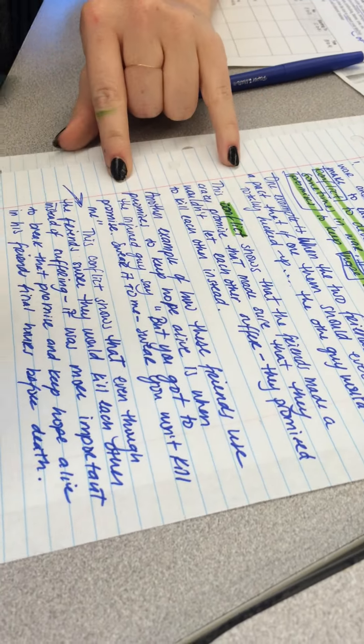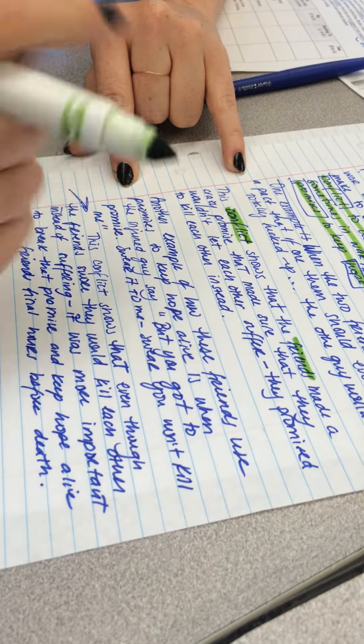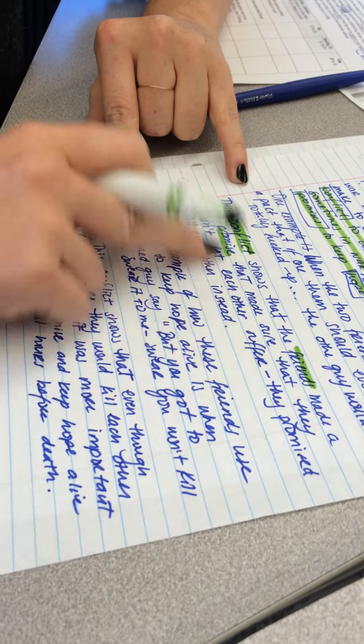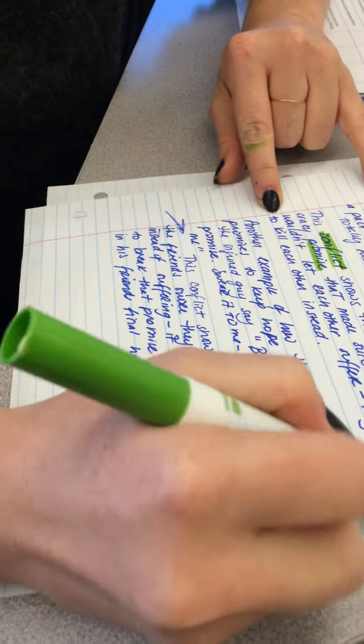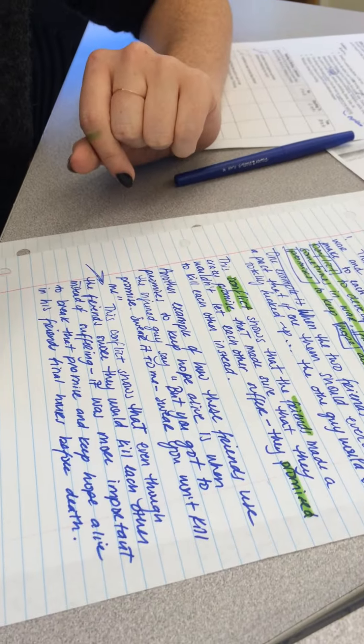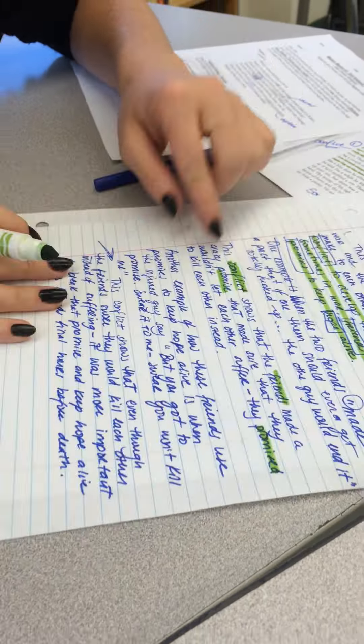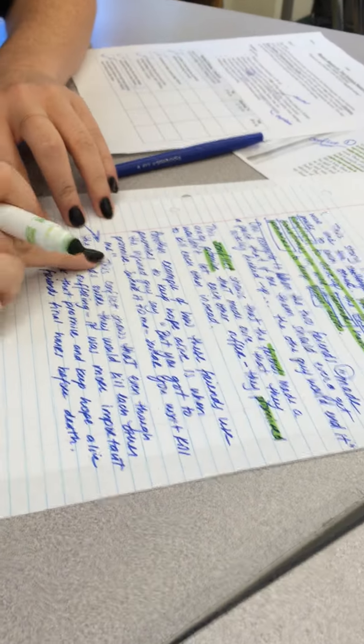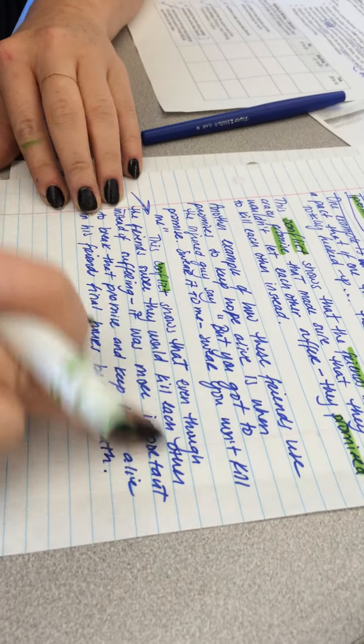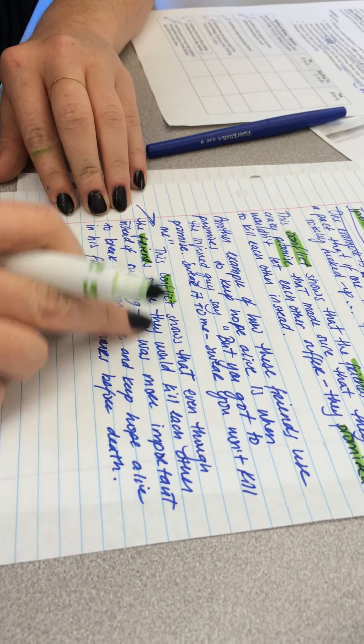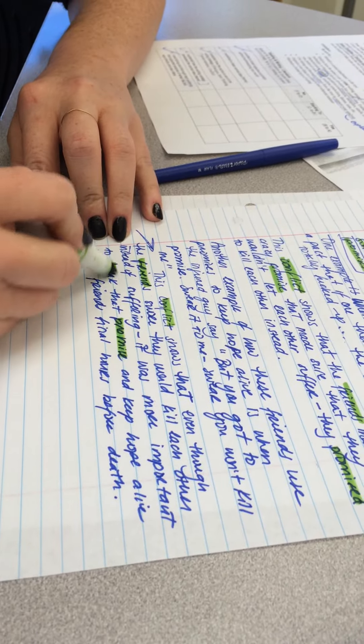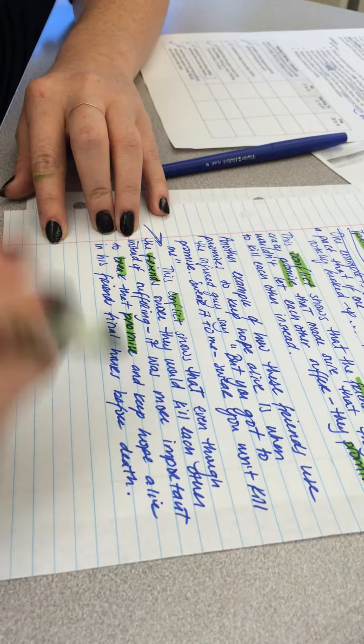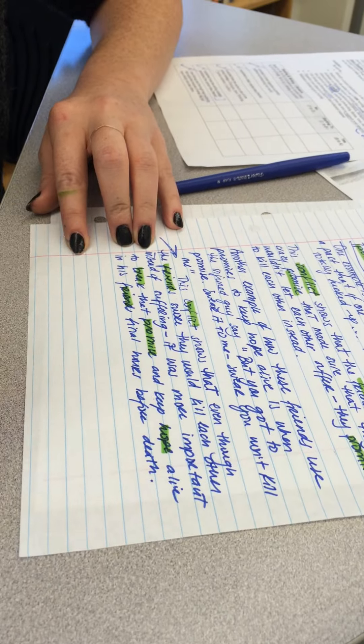So in my explanation, I want to double check to see if I repeat my keywords. So I repeat keyword number one, I'm good. Friends, awesome. Promises, each other, to kill each other. Oh, I don't have hope. Oh, I have promise again. This one doesn't have hope. And then this one, conflict shows that even though friends, friends, swore would kill each other instead of suffering, it was more important to break, oh I have another one, break promises, keep hope alive, friends.